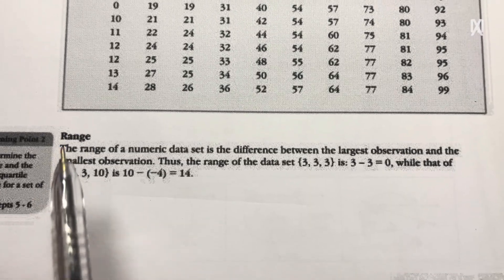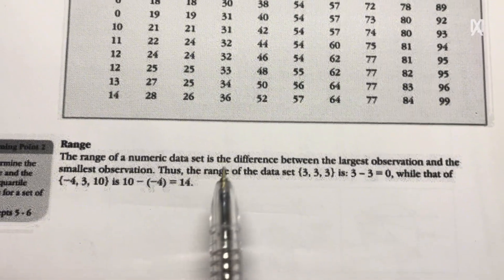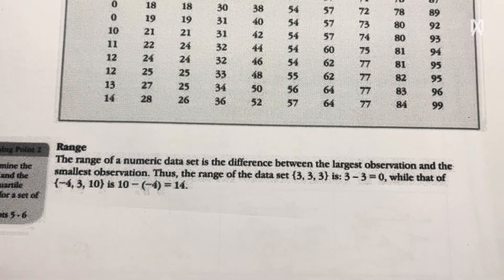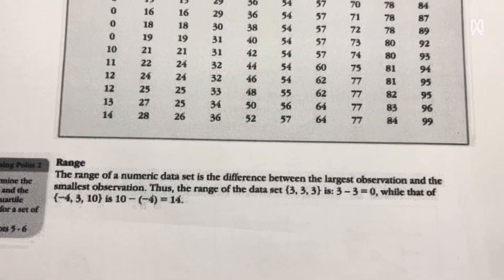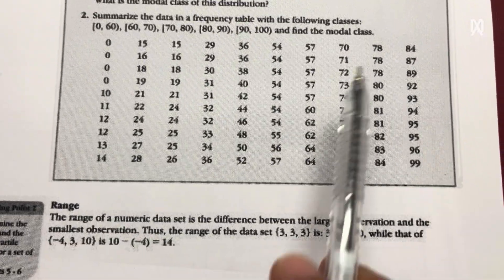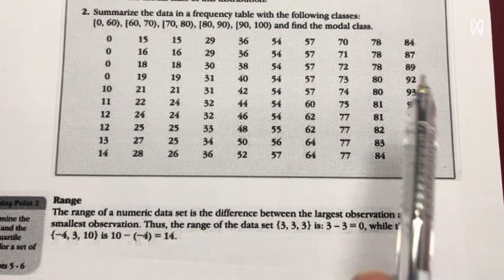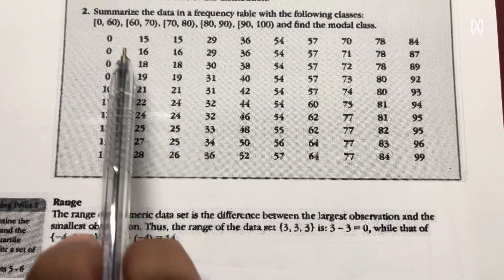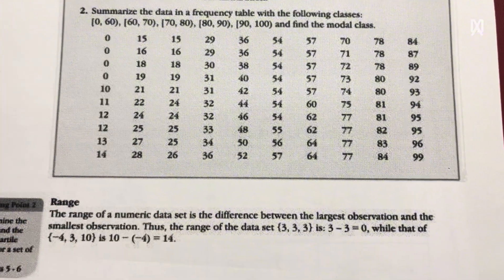The range is the difference between the highest value of the set and the lowest value of the set. So if you have a set like this, the range is 99 minus 0, so it is 99.